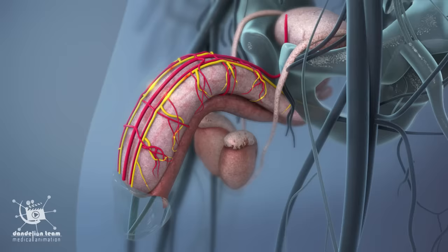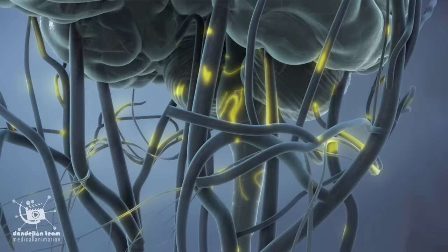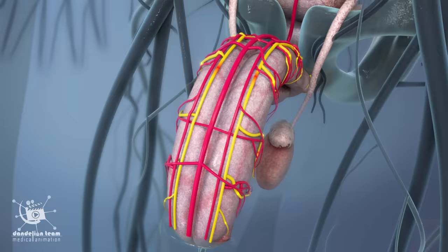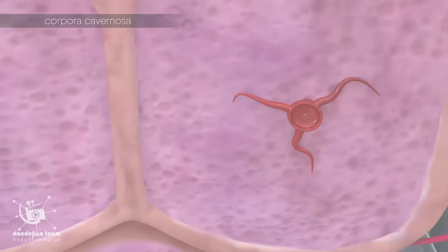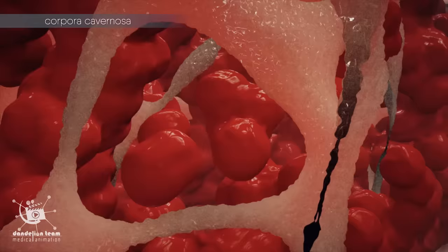An erection begins with sensory and mental stimulation. During sexual arousal, impulses from the brain and local nerves cause two chambers called the corpus cavernosum, which contain a maze of blood vessels, to relax, allowing blood to flow in and fill the open spaces.